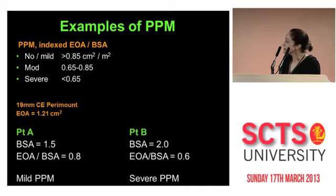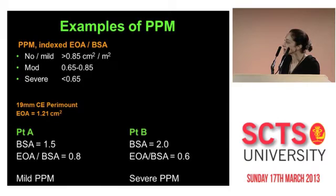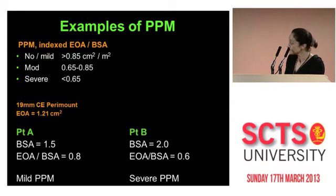So if you put a 19 millimeter Carpentier Perimount valve, which has an effective orifice area published by them as 1.2, in a patient with a body surface area of 1.5, you get mild mismatch. If you put it in a bigger patient, it gives you severe mismatch.